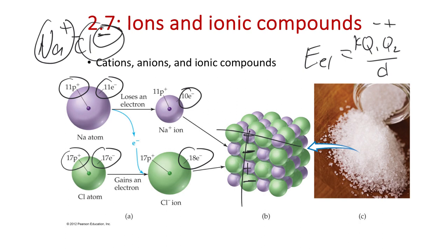The sodium group always forms plus-one cations in ionic compounds—sodium, potassium, rubidium always go to plus one, never plus two or plus three. The next group, the magnesium group—magnesium, calcium—those form plus twos because magnesium is two electrons away from the count of 10, so it can lose two electrons. Beryllium doesn't really form too many ionic compounds. So our next slide shows that the alkali group forms plus one as their common and only ion when forming ionic compounds.